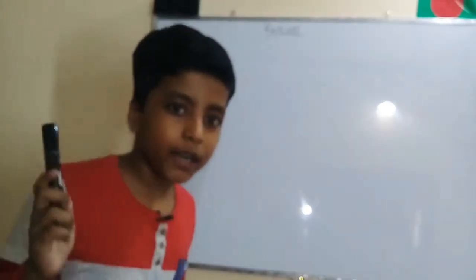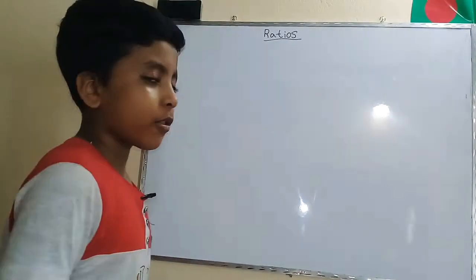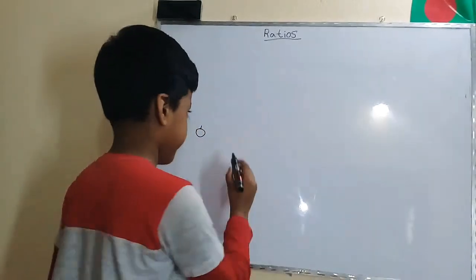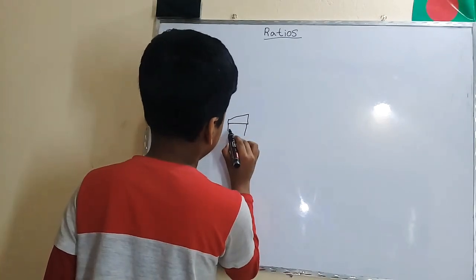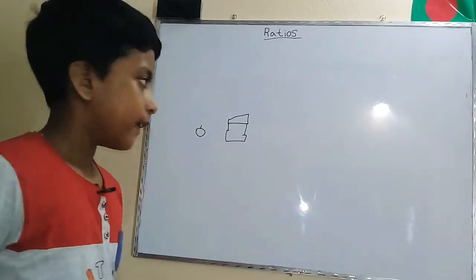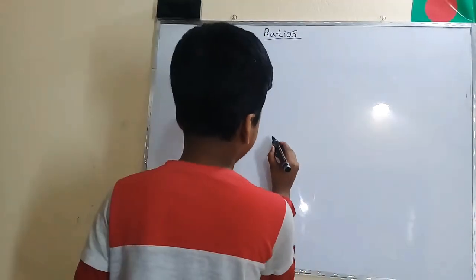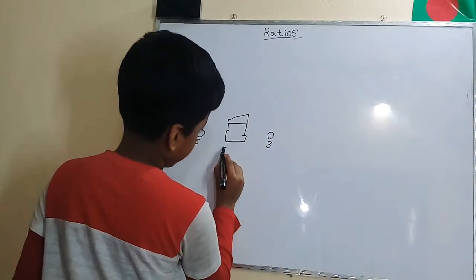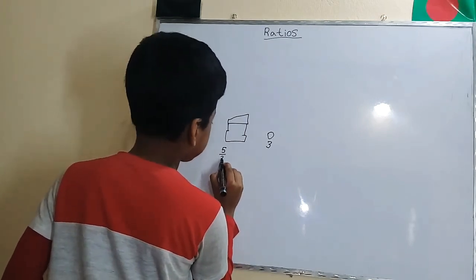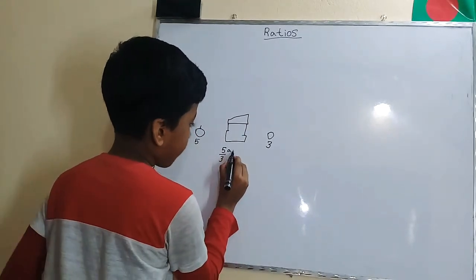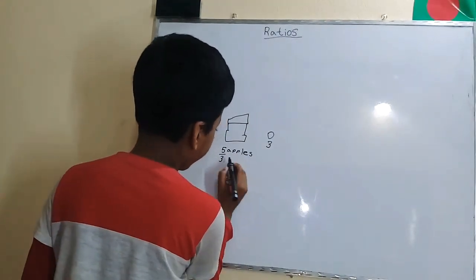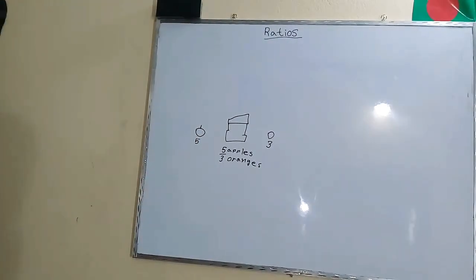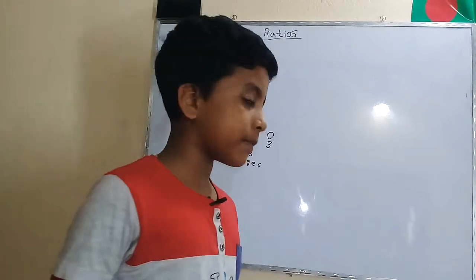Now let's have an example. If you want to compare apples to oranges — well, look at this with ratios now. Let's say a fruit stand sells five apples and three oranges. So the ratio of apples to oranges is five apples over three oranges, or five to three.